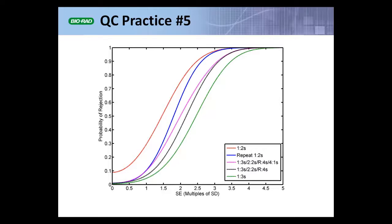The red dashed curve is the 1-2S rule. It has a higher probability of error detection than the other rules shown, but it has a very high false rejection rate — about 9%. The green dashed curve is the 1-3S rule, with a low false rejection rate but only moderate error detection. The blue and magenta dashed curves are two multi-rules: the 1-3S-2-2S-R4S rule and the 1-3S-2-2S-R4S-41S rule, which provide improved error detection over the 1-3S rule.